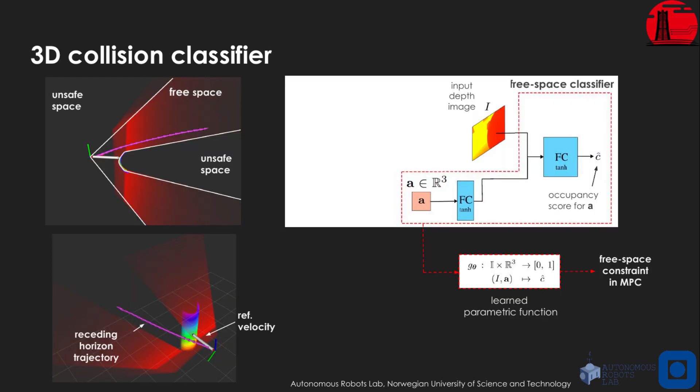The concept of our method is to use a neural network as a 3D collision classifier, which can be queried to label any 3D position as either free or in collision, given an input depth image. Once trained, this network represents a parametric function that assigns an occupancy score between 0 and 1 to any 3D position. This function is fully differentiable, therefore it can be used as an explicit free space constraint inside a model predictive controller.